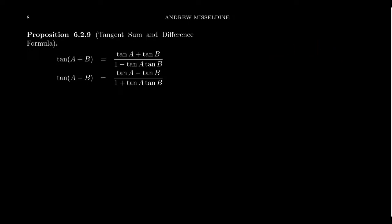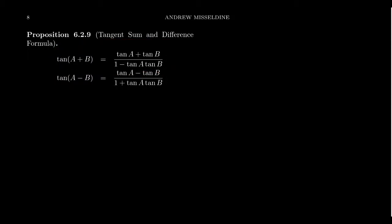So let's look at the angle sum identity. You get tangent of a plus b is equal to tangent of a plus tangent of b over 1 minus tangent of a times tangent of b. And so to prove this identity, we're going to take the left-hand side, tangent of a plus b.